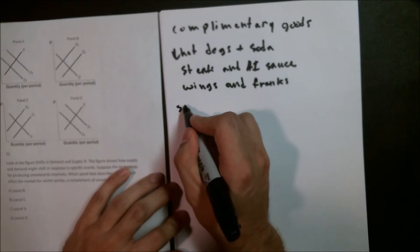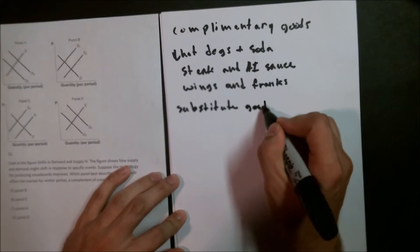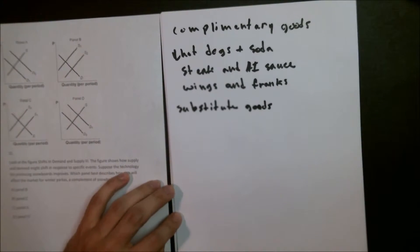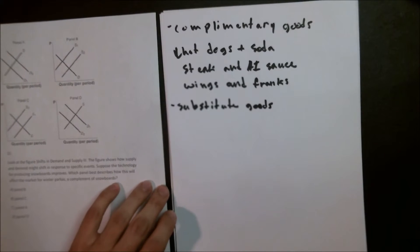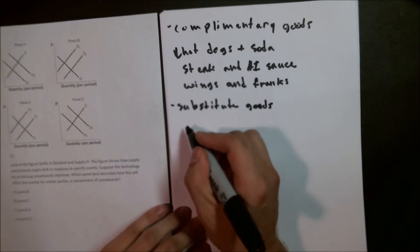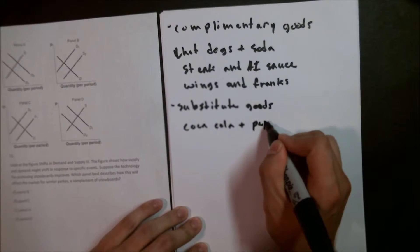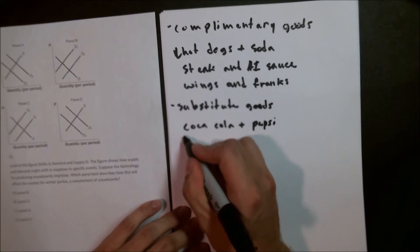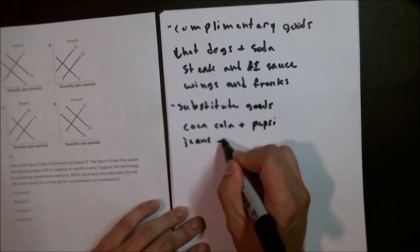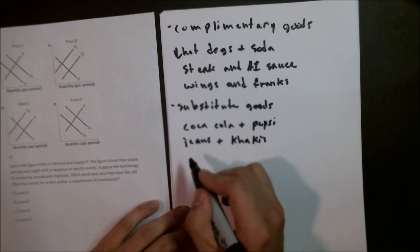So then we have substitute goods. Substitute goods are anything that can replace each other. They're something that both fulfill the same niche of demand for a consumer but aren't the same. Things like that would be Coca-Cola and Pepsi, and other things like maybe jeans and khakis, or maybe hot dogs and hamburgers.